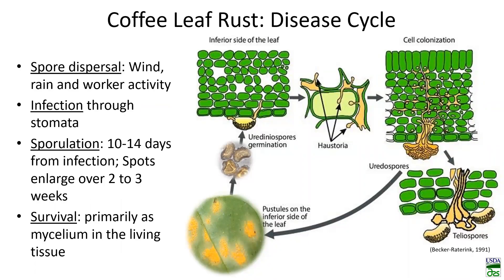I wanted to go over the disease cycle again because the timing and method of spraying will affect the overall coffee leaf rust disease. Spore dispersal occurs by wind, rain, and worker activity predominantly. The spores land on the underside of the leaf and infection occurs through the stomata, so it's very important to get good coverage on the underside of the leaves. Sporulation, once infection occurs, takes a couple of weeks, with visible spores appearing within about 21 days. So it's very important to get your protectants down prior to infection.